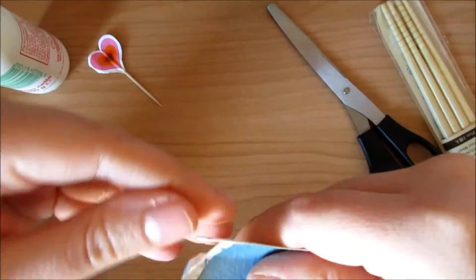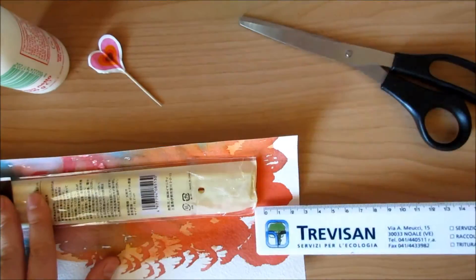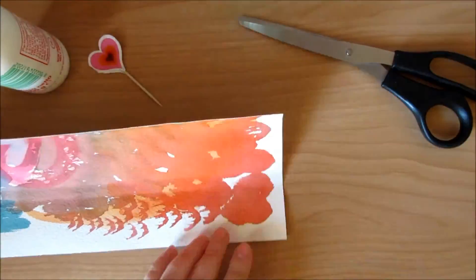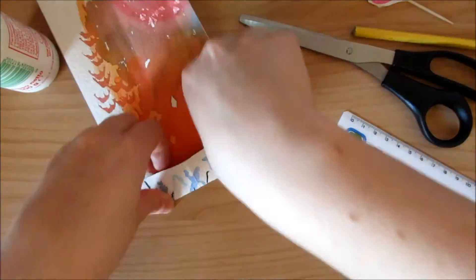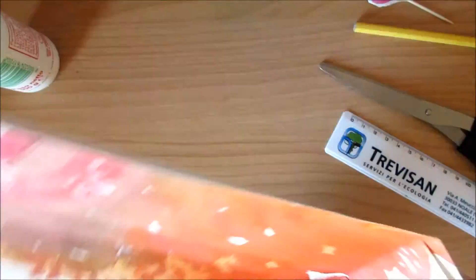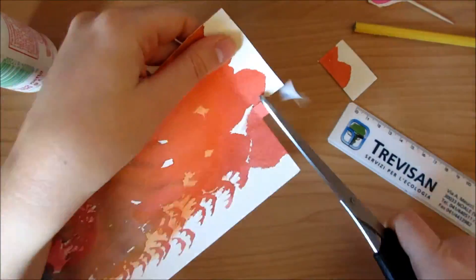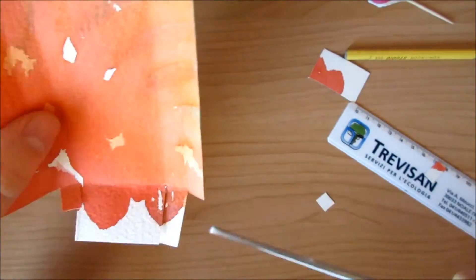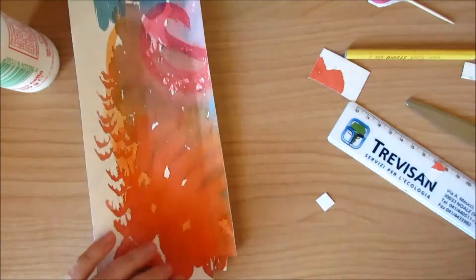Now once I'm done with everything I'm bending the vertical parts which are the closing part of the bottom and then the flap which is going to close and open the box to get to the chopsticks.